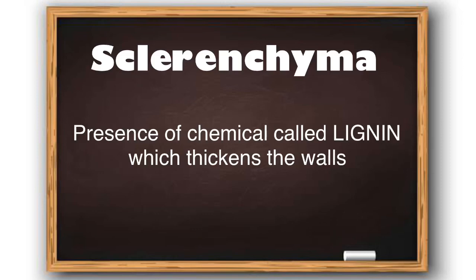Sclerenchyma has cell walls thickened due to the deposition of lignin, a chemical substance that acts as a cement and hardens the wall. It is located in the stem and veins of leaves and provides strength to parts of the plant. An example is the husk of a coconut, which is very hard because of lignin deposition, indicating the presence of sclerenchyma tissue.